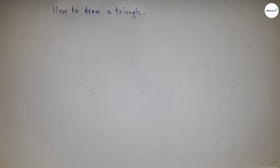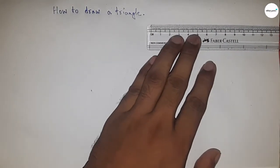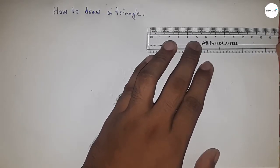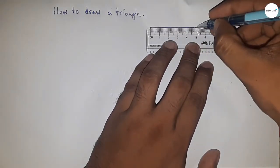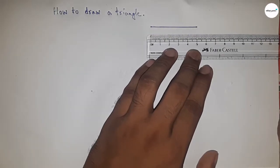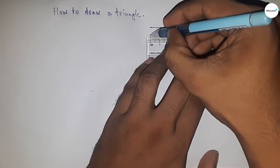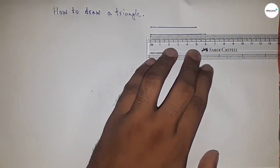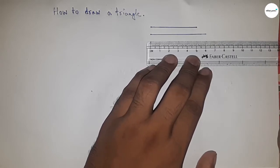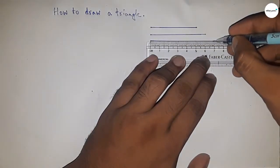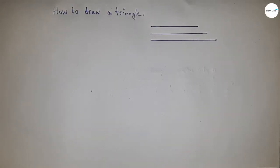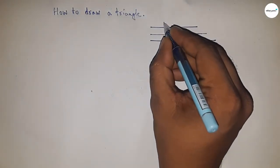First of all, let's draw the three sides of the triangle. The first side is 5 centimeters, the second side is 6 centimeters, and the third side is 7 centimeters. You can take other sides too.